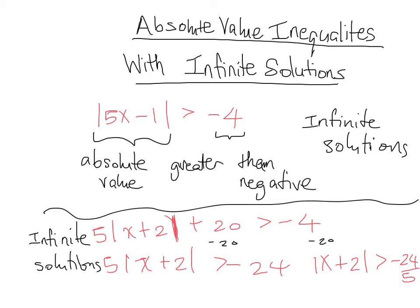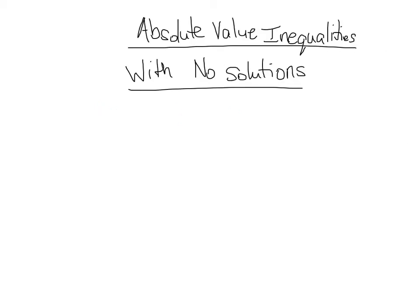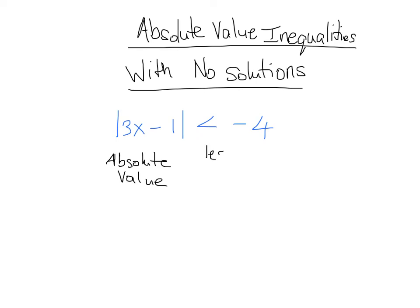Now let's look at how you know there are no solutions. Say you have the absolute value of 3x minus 1 is less than negative 4. Notice the sign is saying the absolute value is less than a negative number. It doesn't matter what's inside the absolute value — the absolute value of something is never, ever less than a negative. Absolute value cannot be less than a negative, which means it doesn't matter what x is. The absolute value cannot be negative, so there are no possible solutions — no solution.